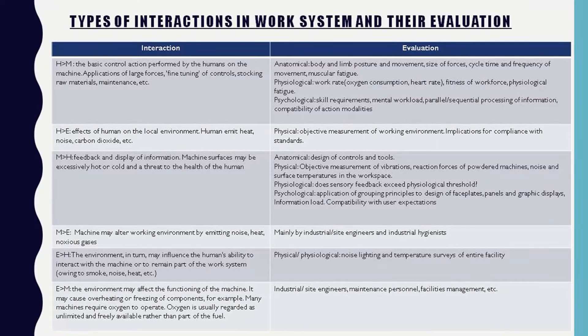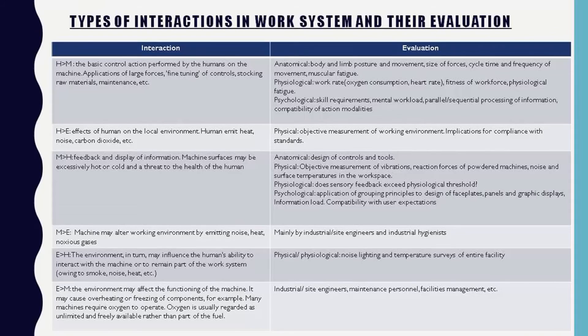This ergonomic system has a table divided into two columns: interaction and evaluation of concept. Each component of a work system may interact directly or indirectly with the others. For example, a machine may change the state of the environment by emitting noise or heat, which also affects the user.